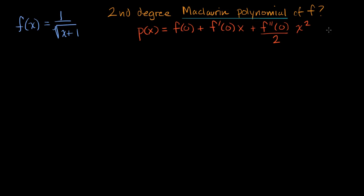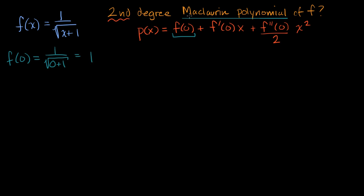If we wanted a higher degree we could keep going, but they're asking us for the second degree, so this is the form we need — these three terms. Now let's evaluate the function and its derivatives at zero. f of zero is equal to one over the square root of zero plus one, which is one over the square root of one, the principal root of one, which is positive one. So f of zero equals one.